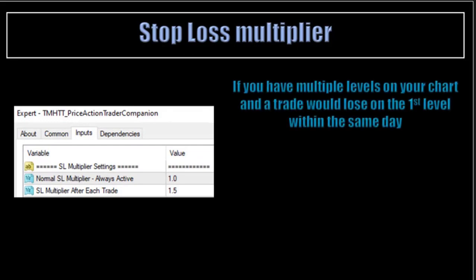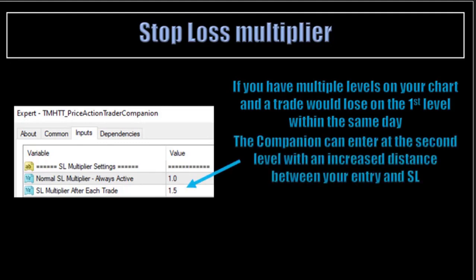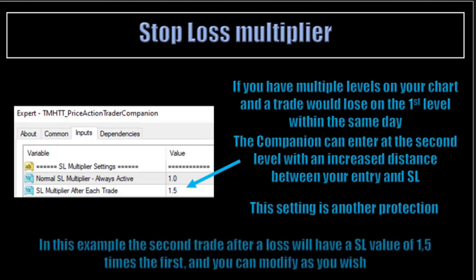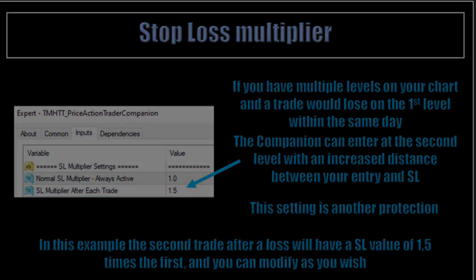Stop-loss multiplier. If you have multiple levels on your chart and the trade would lose on the first level during the same day, the companion can enter at the second level with an increased distance between your entry and your stop-loss. It's another protection. In this example, the second trade after the first loss will have a stop-loss value of 1.5 times the first, and you can modify this as you wish.